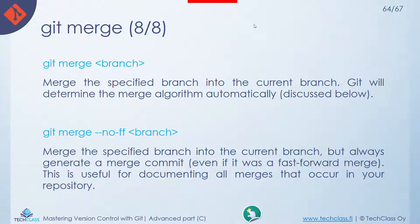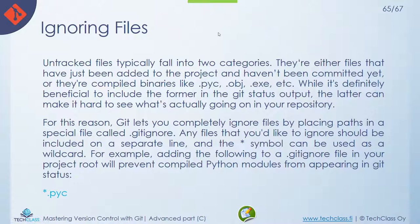In many cases when starting a project, you need to ignore certain file formats or directories. For example, in .NET framework development, compiled output directories change constantly and are not directly related to the project's development. You may also want to ignore files containing local passwords or credentials — using .gitignore, you can manage which files are ignored and not shared or synced with your branches.